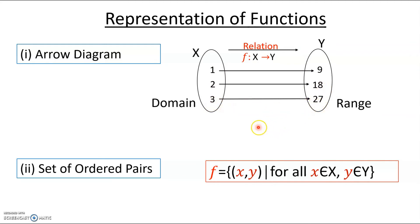The set of Cartesian products of these two will be the co-domain, but our range will be 9, 18 and 27. So the set of ordered pairs is (1,9), (2,18), (3,27).